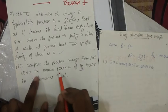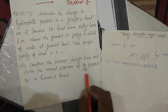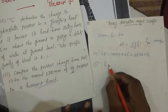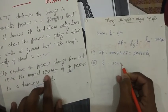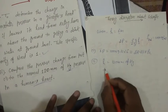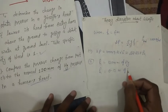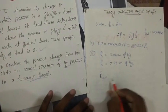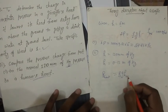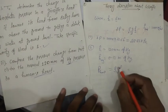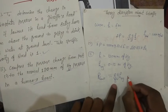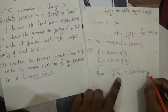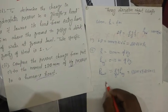The second question asks to compare the pressure from part one to the normal human heart pressure of 120 mmHg. Converting: 120 mmHg = 0.12 m of Hg. Human heart pressure = ρgh = density of mercury × g × h = 13600 × 9.81 × 0.12.